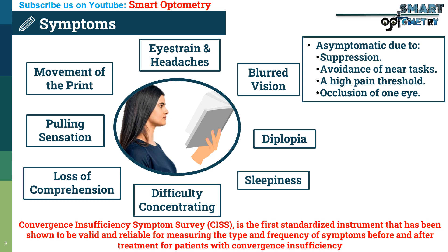The Convergence Insufficiency Symptom Survey, or CISS, is the first standardized instrument that has been shown to be valid and reliable for measuring the type and frequency of symptoms before and after treatment for patients with convergence insufficiency.